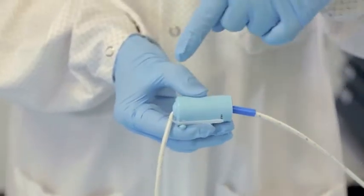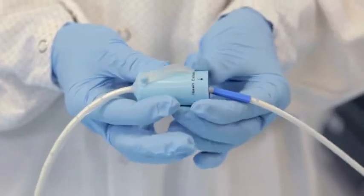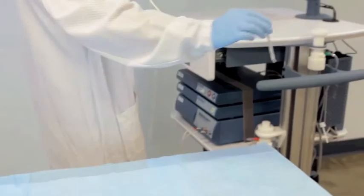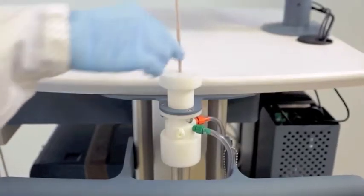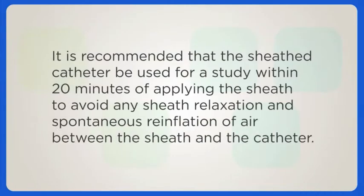If the tab is not secured against the base of the slider, it may cause the catheter to bend. You are now ready to pressure calibrate the catheter and then intubate the patient and perform the procedure. It is recommended to use the catheter within 20 minutes of applying the sheath to avoid any sheath relaxation and spontaneous reinflation of air between the sheath and the catheter.